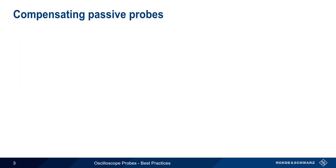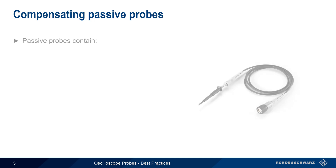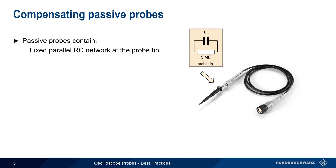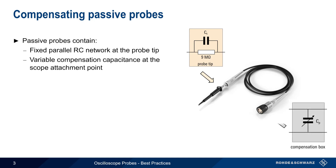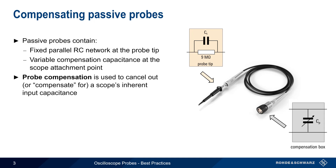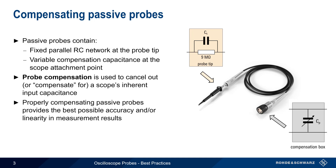Let's start with passive probe compensation. Passive probes contain both a fixed parallel RC network in the probe tip, as well as a variable compensation capacitance, usually at the scope attachment point. Probe compensation involves adjusting this variable capacitance in order to cancel out or compensate for the inherent input capacitance of a scope. Properly compensating passive probes is important for obtaining the best possible accuracy and linearity in measurement results.